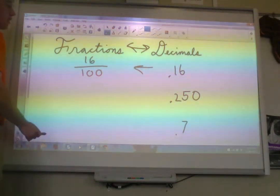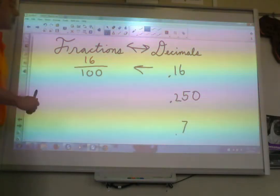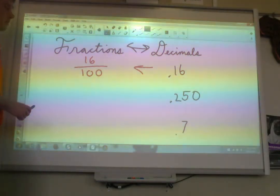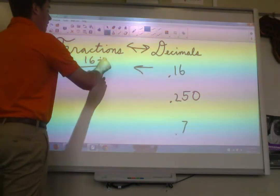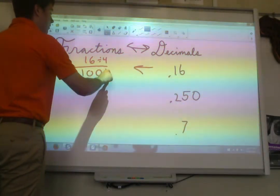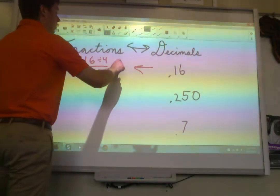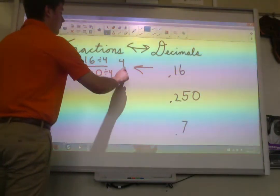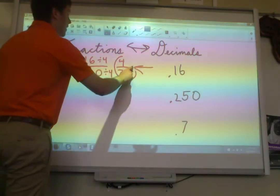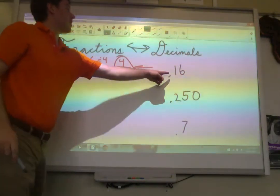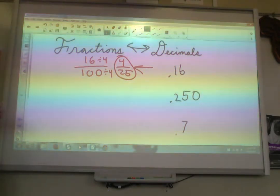16 over 100. That's what it is. Now the only thing we need to do is simplify. 16 and 100 can both be divided by 4, so we'll do that. 16 divided by 4 is 4. 100 divided by 4 is 25. That's as simple as we can get, so that's our final answer. 0.16 as a decimal is 4 over 25 as a fraction.